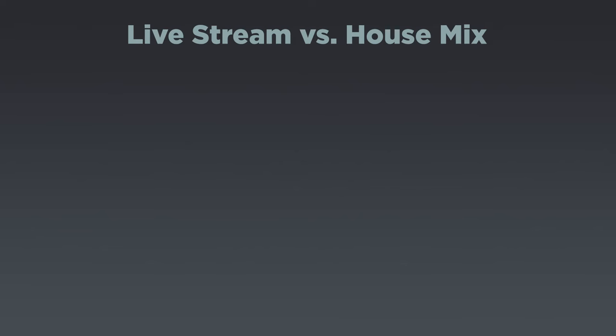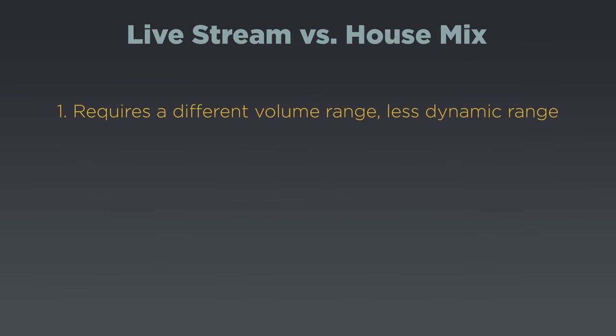And also the fact that the equipment we're sending our live stream over might not even be able to handle that wide of a dynamic range without distorting. So the first major difference in requirements for our mixes between house and live stream is a different volume range — or in the sound world, we say that the live stream mix requires less dynamic range.